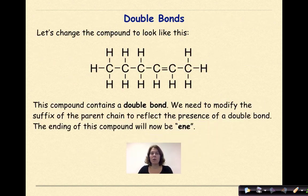Now let's change the compound to look like this. The compound contains a double bond, and where is that double bond? It is right here. We need to modify the suffix of the parent chain to reflect the presence of the double bond. The ending of this compound will now be ENE.